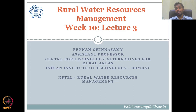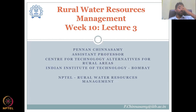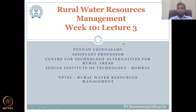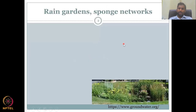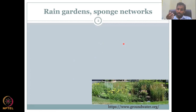All of this has been looking at supply-side management because you are increasing the supply. In the constructed methods, we looked at dams and big cemented structures to capture water, pools, etc. Whereas this week, we are looking at more nature-based solutions, which are more important because they preserve the ecosystem. In the last class, we looked at check dams and channels along hill slopes. Today, let's look at rain gardens and sponge networks.